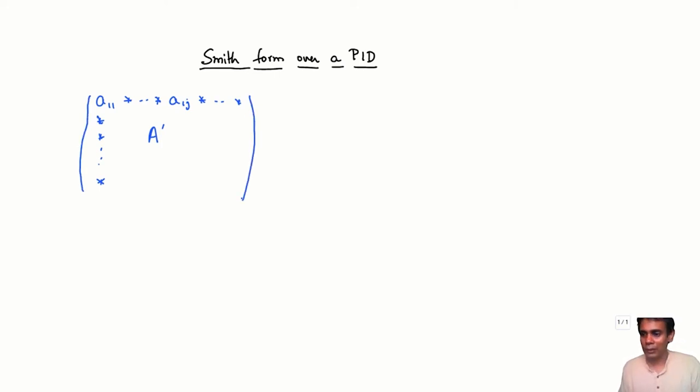When we were in the Euclidean domain, we were looking at the case of trying to clear out a_1j using a_11, and failing which we would somehow try to reduce the size of a_11. So we had the case where if a_11 divides a_1j, then you just do c_j goes to c_j minus q c_1, where a_1j equals q a_11.